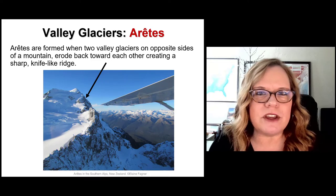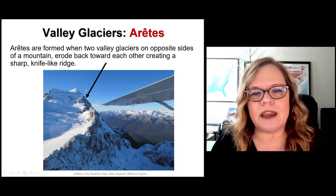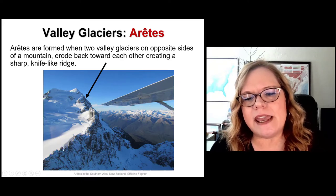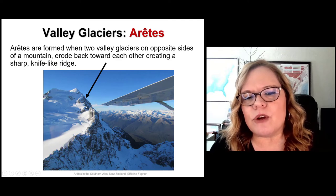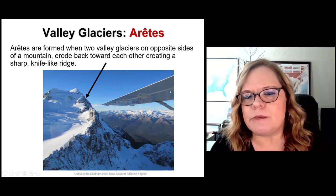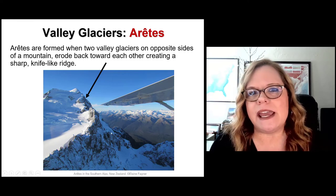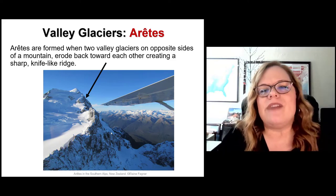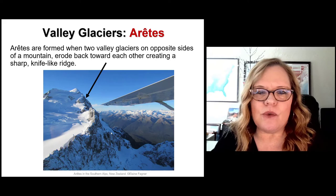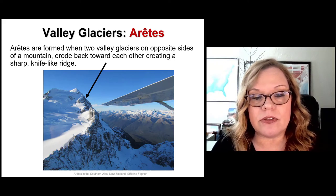Another cool valley glacier feature is the arête. When two valley glaciers carve down the same mountain from opposite sides, it makes a very steep knife-like ridge — like you see here in the Southern Alps of New Zealand. Both glaciers are carving down the same edge, making a very sharp profile called an arête. Mountain climbers hike along these profiles to reach the summit.